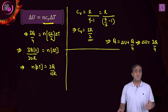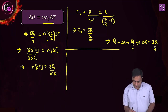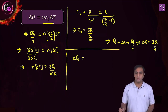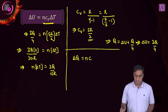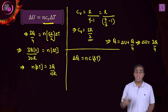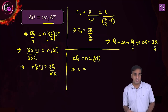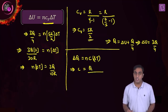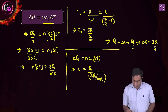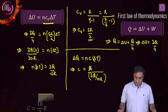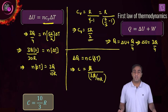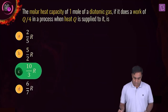Going back to the expression for molar heat capacity, C = ΔQ/(N·ΔT) = Q ÷ (3Q/10R) = 10R/3. So the molar specific heat is 10R/3, and the correct option for this question is C.